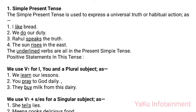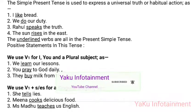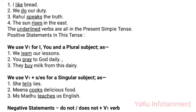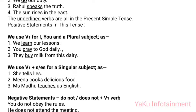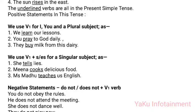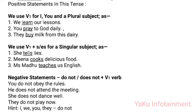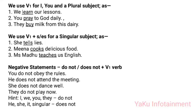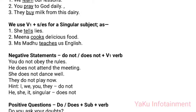Present tense is used to express a universal truth or habitual action: 'I like bread,' 'We do our duty,' 'Rahul speaks the truth,' 'The sun rises in the east.' Positive statements: We use V1 for I, you, and plural subjects — 'We learn our lessons,' 'You pray to God daily,' 'They buy milk from this dairy.' We use V1 plus S/ES for a singular subject — 'She tells lies,' 'Meena cooks delicious food,' 'Ms. Madhu teaches us English.'